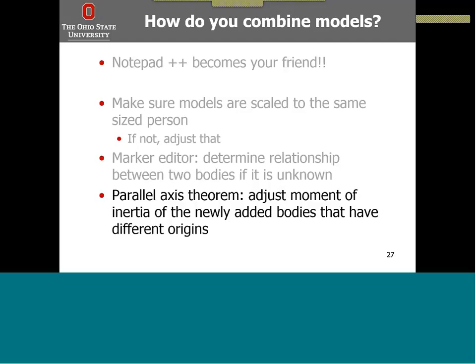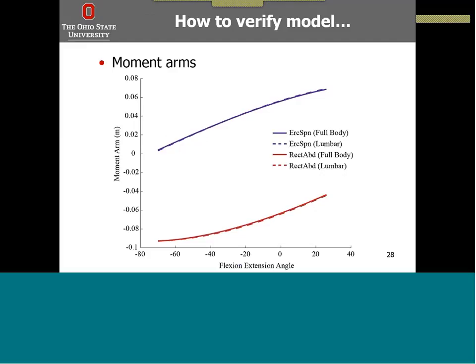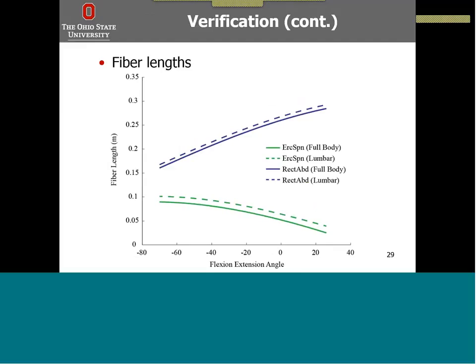Did you do any checks to have confidence in this new model? Because all that coding can make mistakes. Yes. Because I used the Lower Limb Model 2010 as my base without changes, I particularly looked at my torso. I looked at the moment arms of both abdomen and back muscles — the erector spinae and the rectus abdominis. You can see the full body model in solid and the dashed line is the lumbar model created by Christophe; between the two muscles they match quite well. I also looked at the fiber length of these two muscles, and they also match quite well.